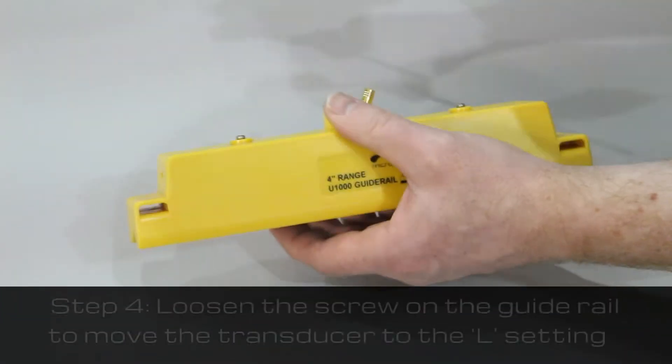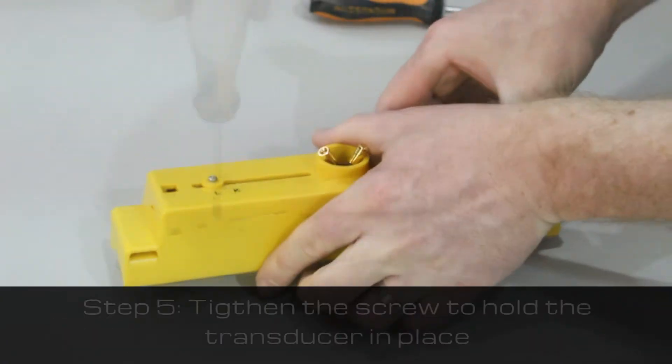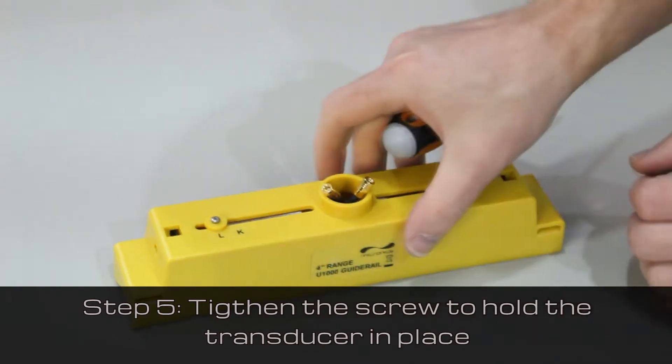Loosen the screw on the guide rail to move the transducer to the L setting. Then tighten the screw to hold the transducer in place.